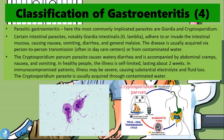The Cryptosporidium parvum parasite causes watery diarrhea and is accompanied by abdominal cramps, nausea, and vomiting. In healthy people, the illness is self-limited, lasting about two weeks. In immune-compromised patients, illness may be severe, causing substantial electrolyte and fluid loss. The Cryptosporidium parasite is usually acquired through contaminated water. In the image below you can see the Cryptosporidium contaminated water, and on the left is a microscopic image of Giardia intestinalis, or Giardia lamblia.